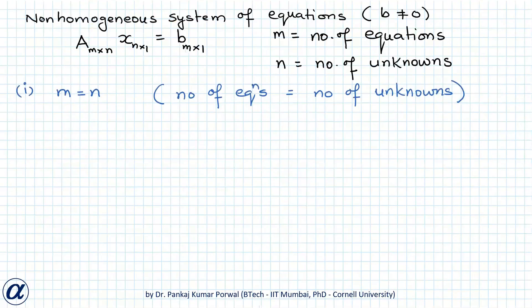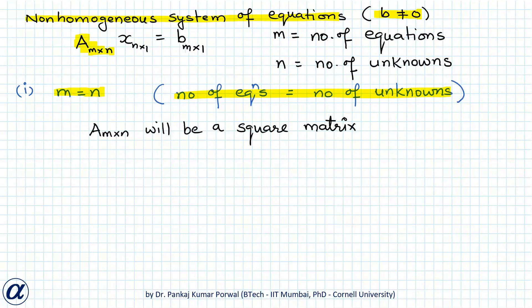Let's first consider the non-homogeneous system of equations where vector b is a non-zero vector and the number of equations equals the number of unknowns. In this case, since m equals n, our coefficient matrix will be a square matrix, so we can find the determinant of A and use the determinant method to analyze this system for consistency.